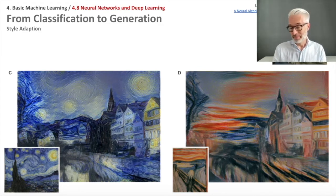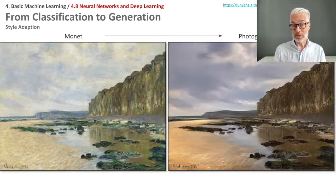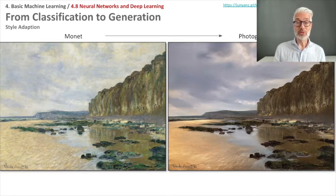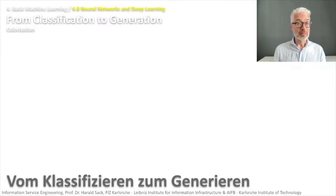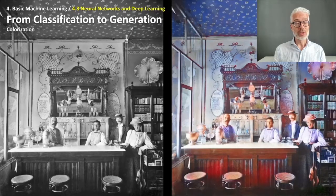This is already rather impressive. You can even go a step further and do it the other way around — you can try to change the style of a painting into a photograph, like here for example a Monet picture that becomes a photograph. This is also done by deep learning neural networks.